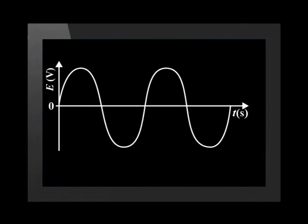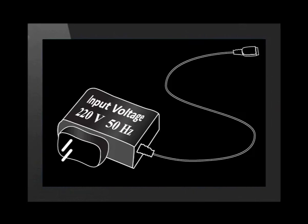When we see the graph of EMF versus time, we immediately see that the graph goes above and below the zero volts line. This means that electricity is first flowing one direction and then the other. When a cell phone charger is plugged in, the current goes one direction and then the other and back again. It repeats this 50 times in a second, giving us the 50 Hertz marked on it.